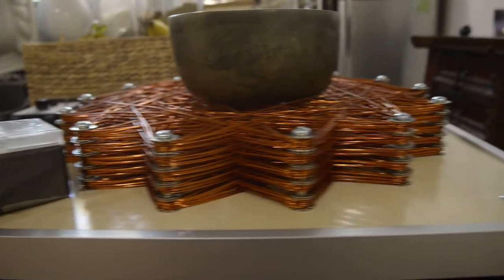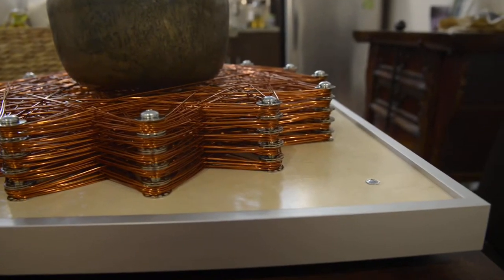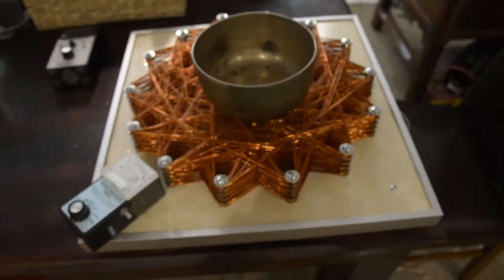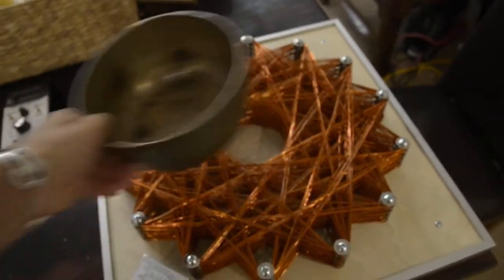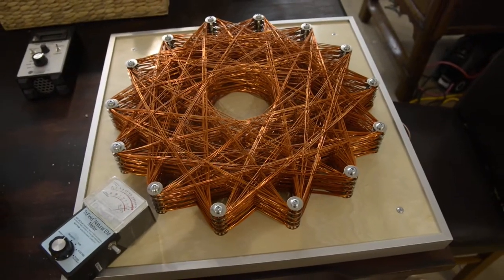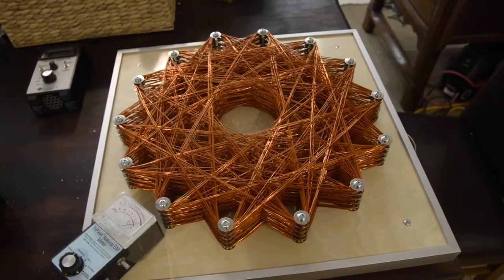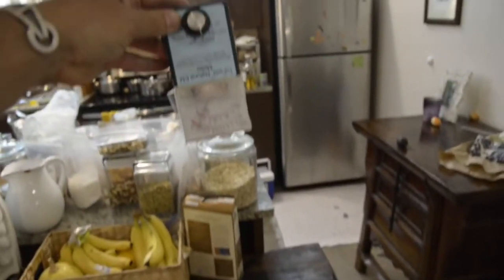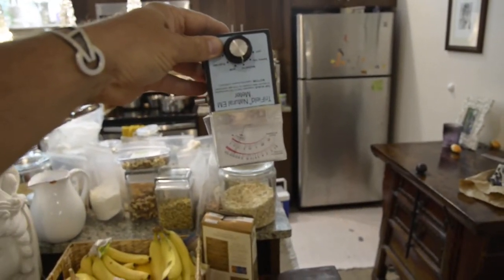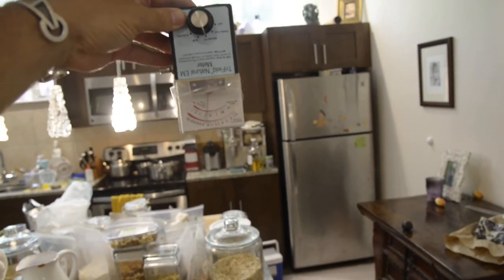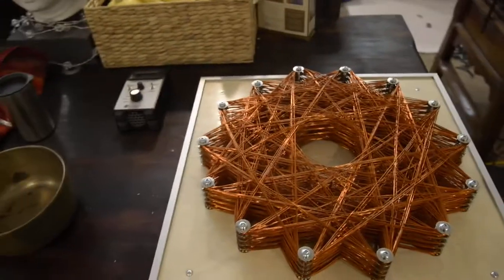These coils are now five stories deep, which means at very low power they produce a huge magnetic field. My amp is running very low power, but you can see the magnetic field on this coil goes way above, all the way up to the ceiling.